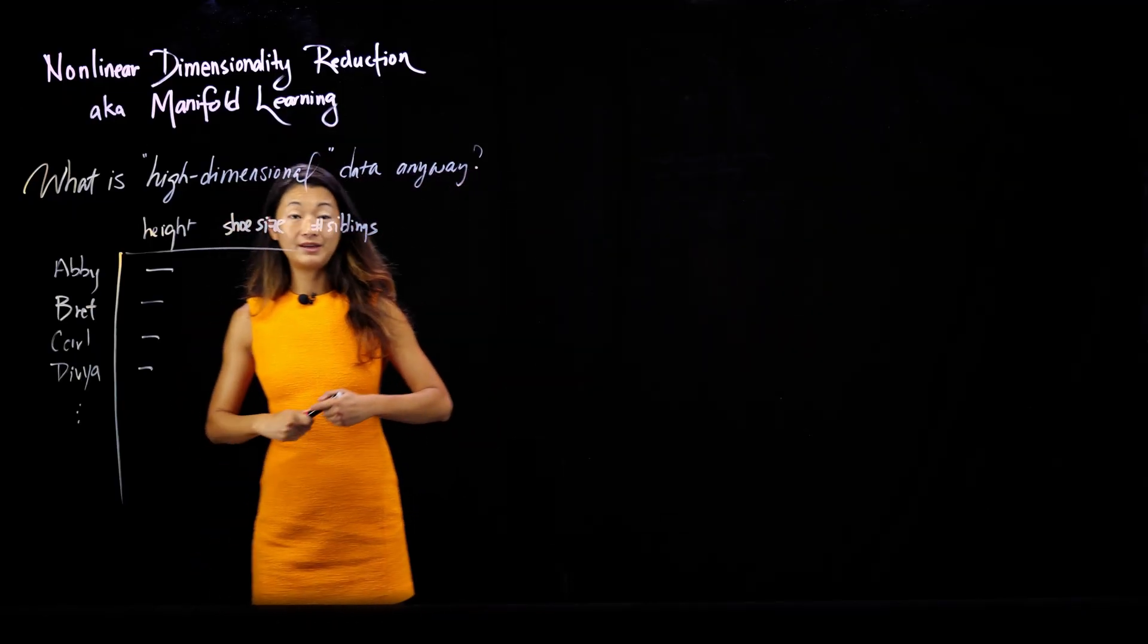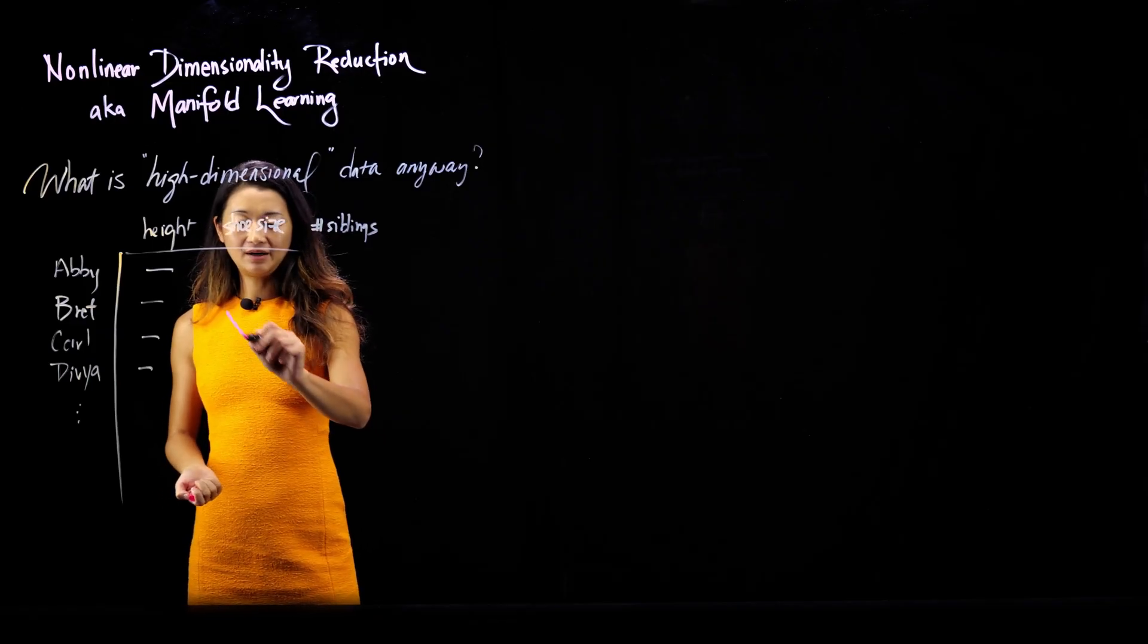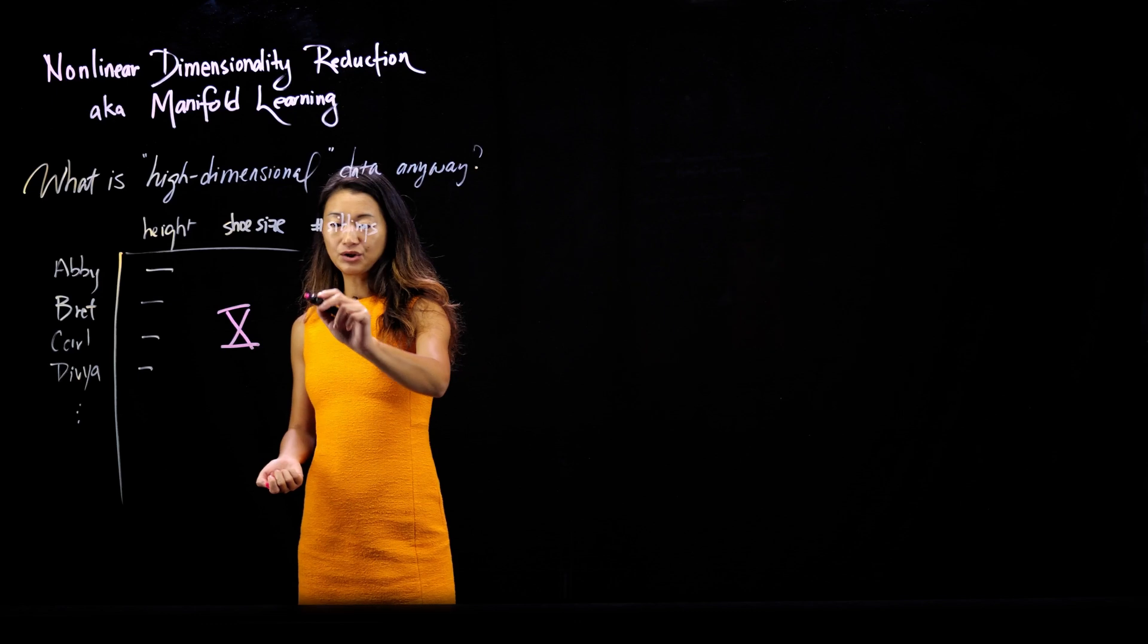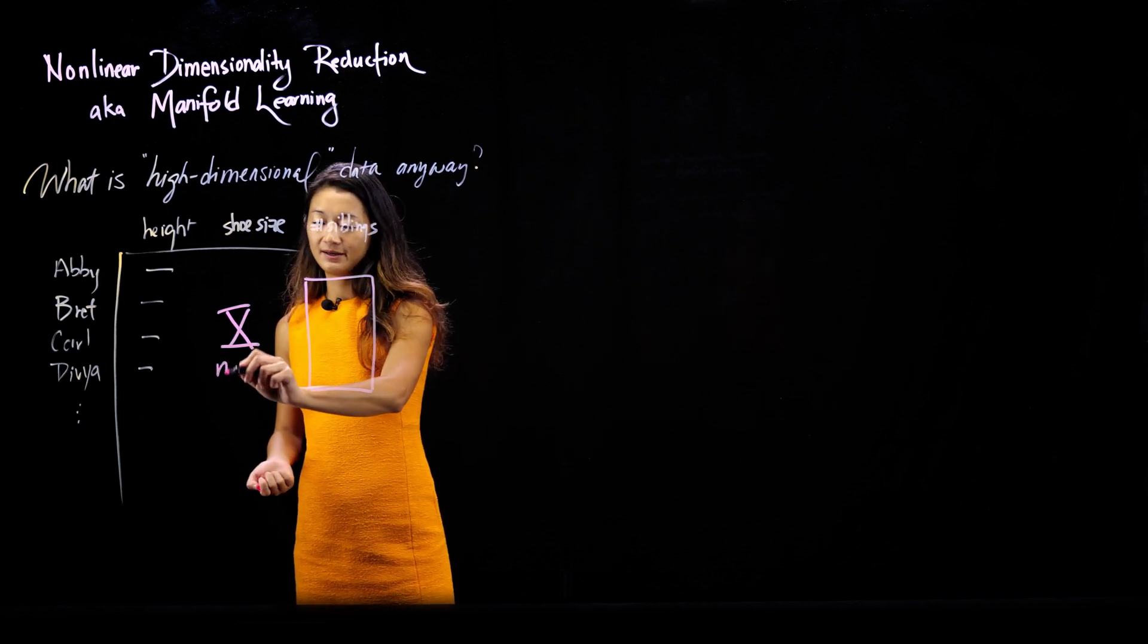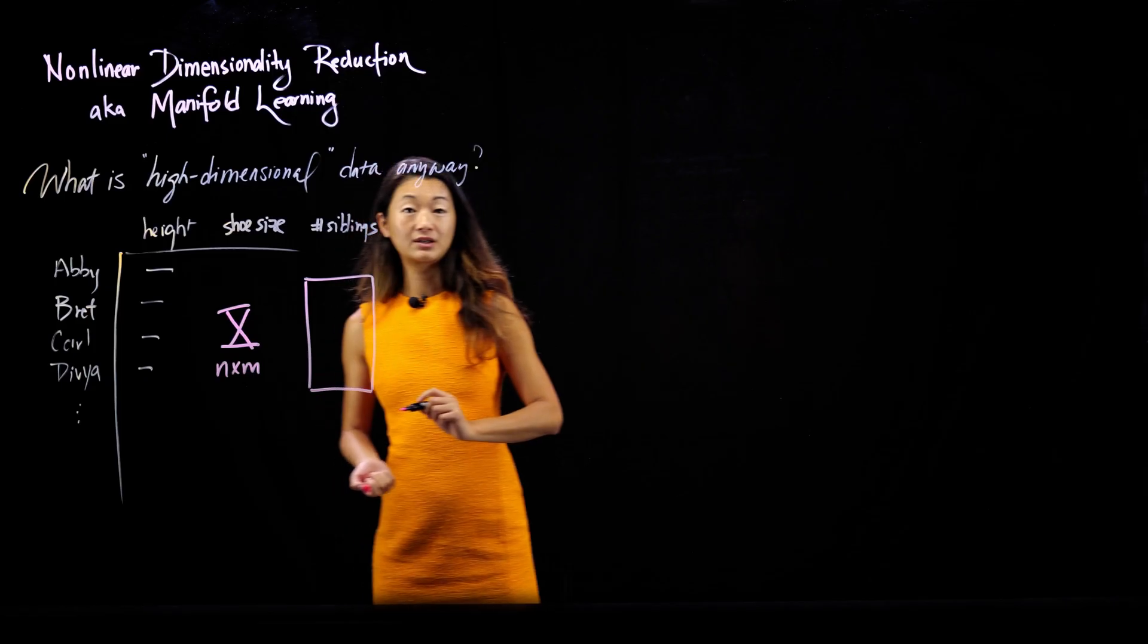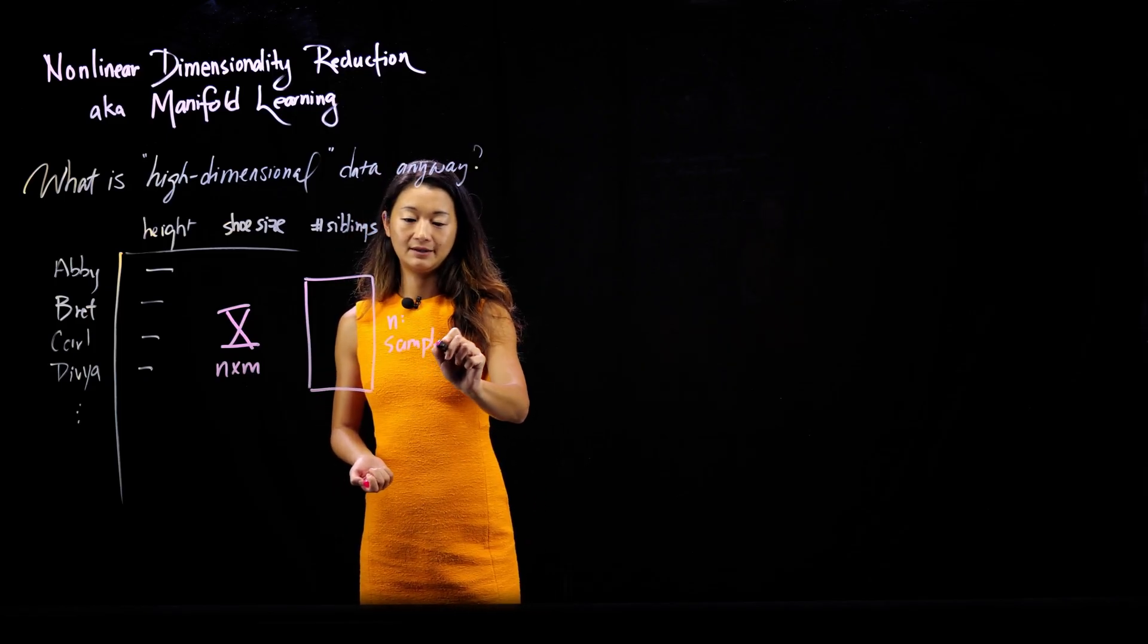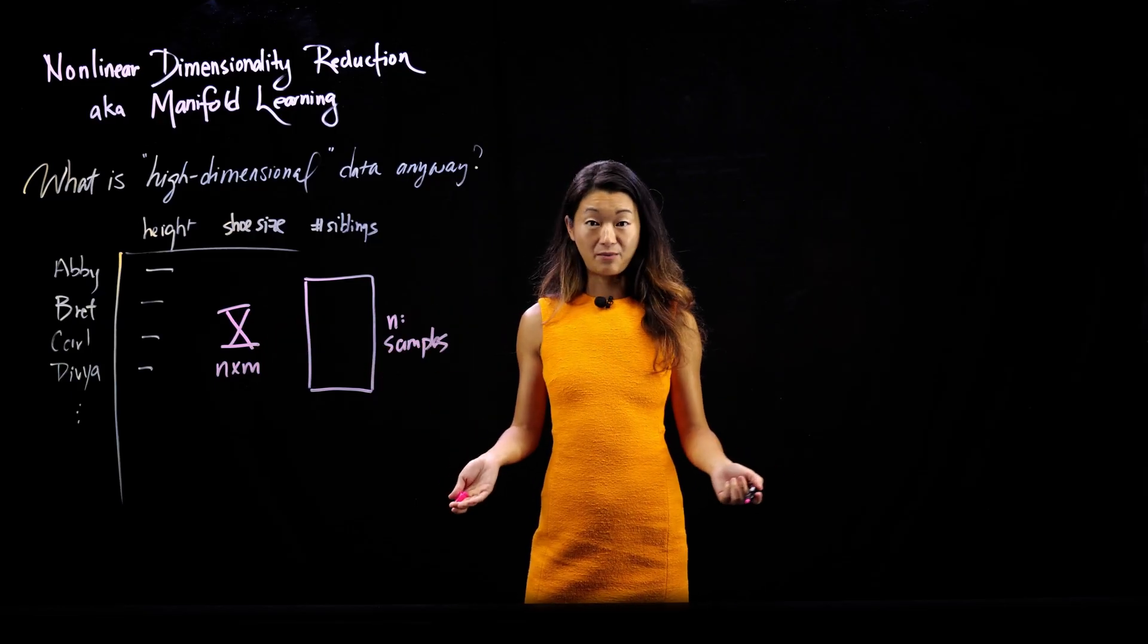what we end up with is a matrix. This is our favorite way of representing data, and I'm going to call this big X here for X matrix, and the matrix is going to be a rectangle that is going to be an m by n matrix, where n is the number of samples. In this case, in my example here, n is the number of individual people that we have in our data set, and m is going to be the number of measurements.